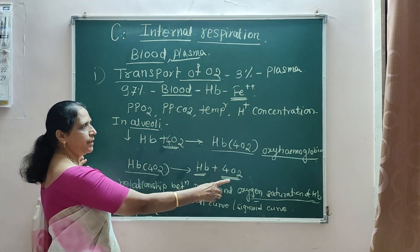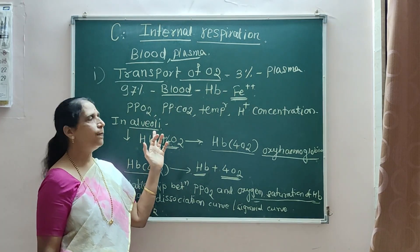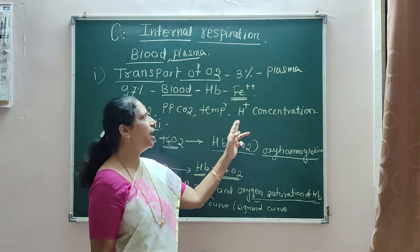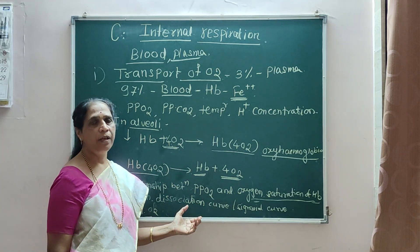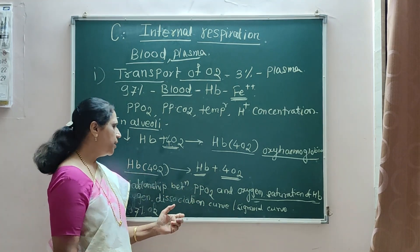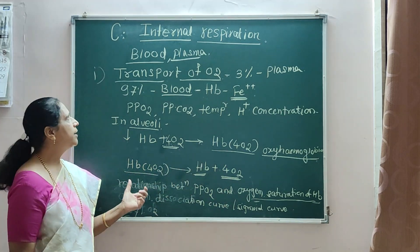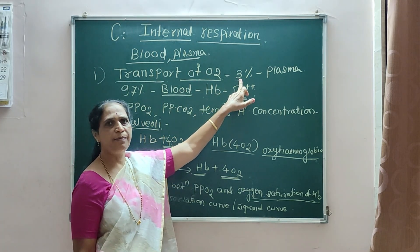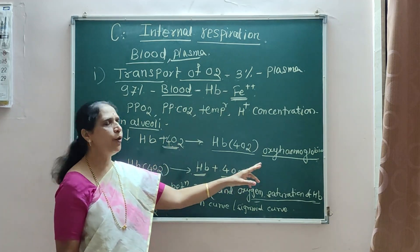When oxyhemoglobin enters the tissue, conditions are reversed: partial pressure of oxygen in the tissue is low, while partial pressure of CO2 is higher, along with higher temperature and higher H+ concentration. These conditions decrease the oxygen carrying capacity of hemoglobin. As a result, oxyhemoglobin dissociates to form Hb + 4O2. Only 3% of O2 is transported by plasma while the remaining 97% is transported by blood as oxyhemoglobin.